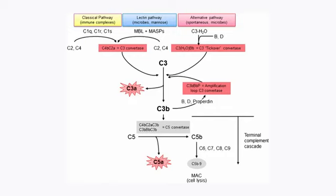C4B then recruits C2. C2 cleaves to form C2A and C2B, where C2A binds with C2B to form C3 convertase. The C3 convertase then breaks C3 into C3A and C3B. C3A is released, and there is formation of a C4B, C2A, and C3B complex called C5 convertase. This C5 convertase breaks C5 into C5A and C5B.